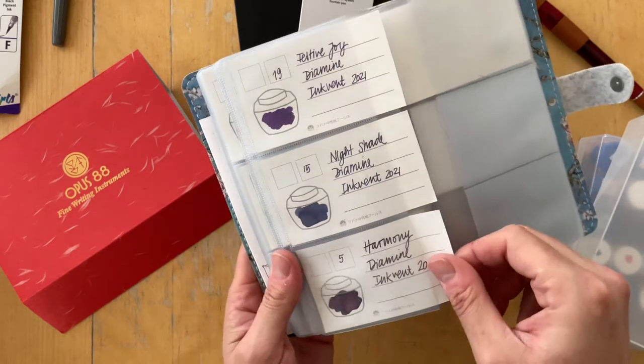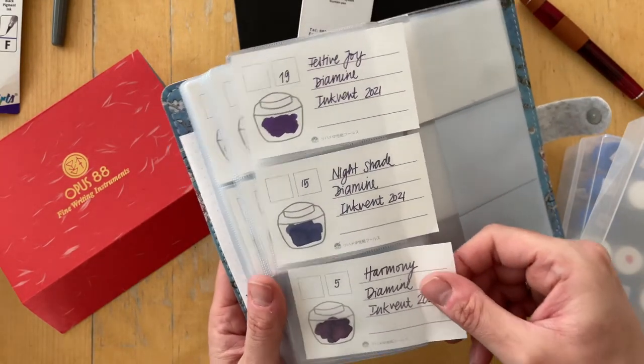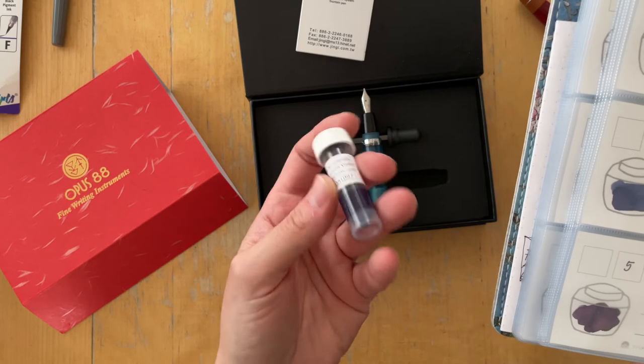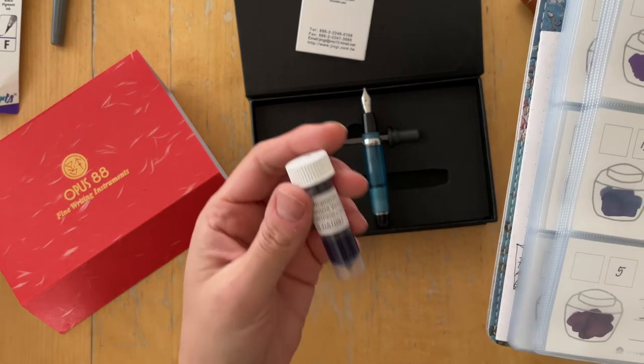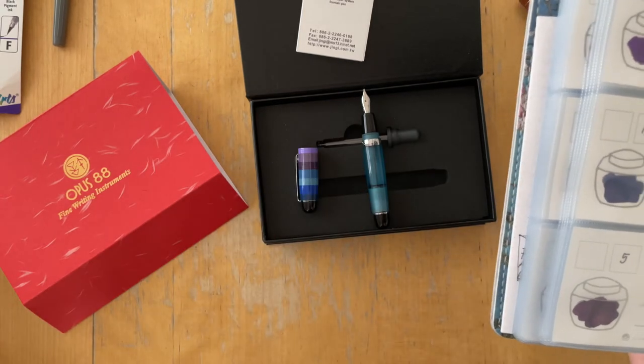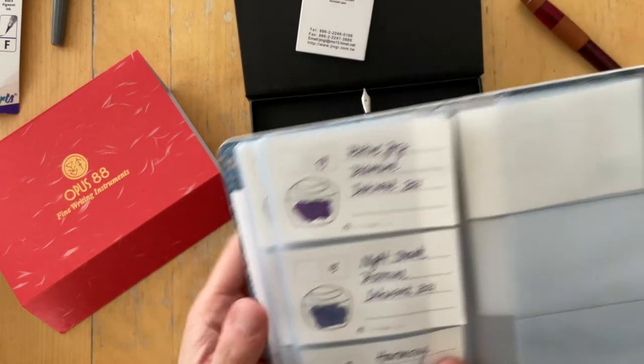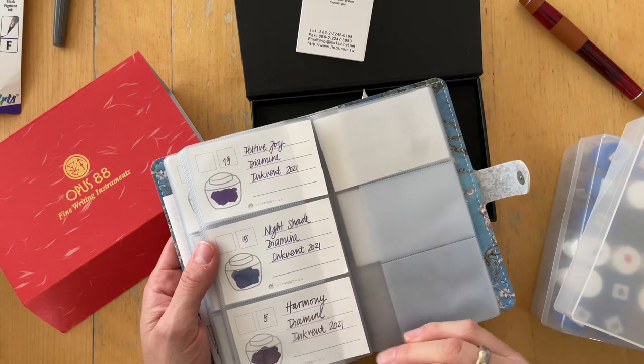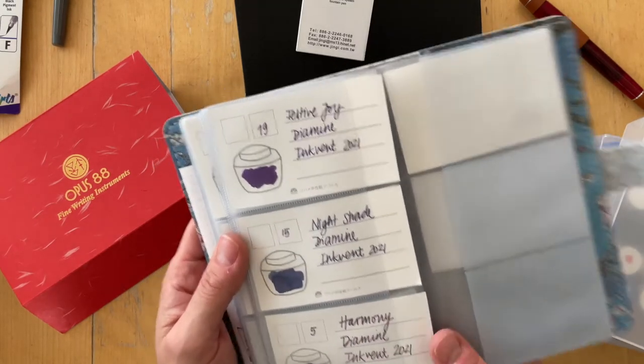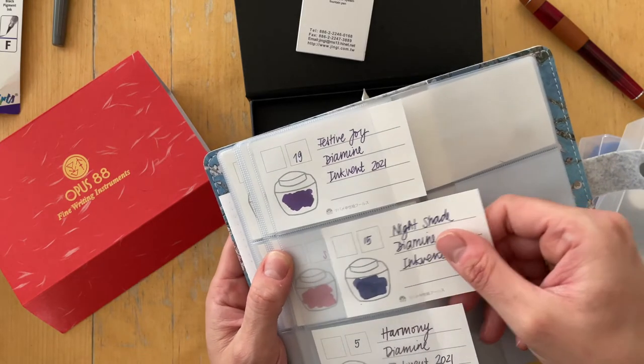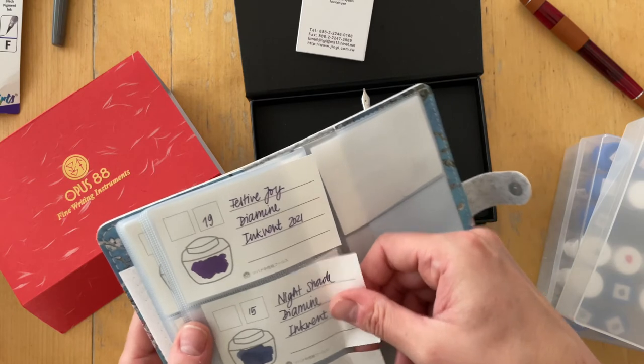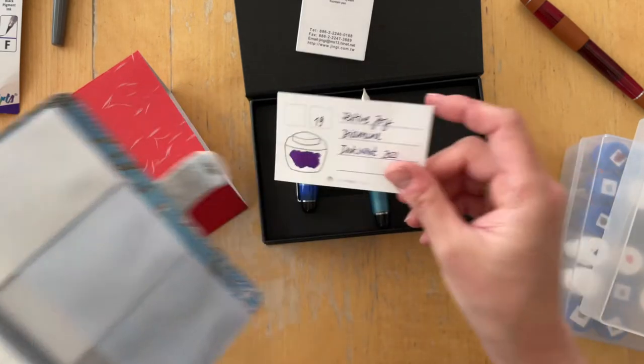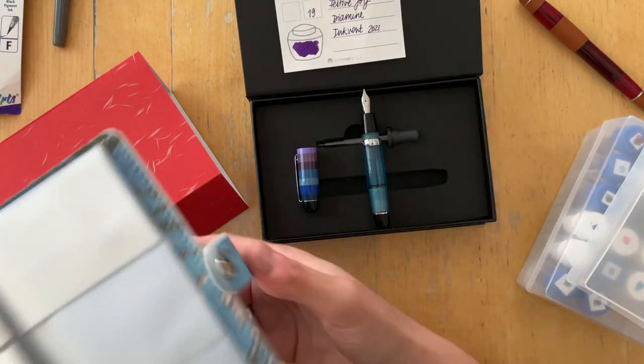I don't know. I don't want to use a shimmer ink at all. And I'm not so sure. I don't know how this is supposed to perform regarding dryness and how wet it is. So I think I'm going to leave this here and I'm going to go with a purple ink from the Diamine ink vent. And these are three that I filed under purple. Nightshade is really, I think I'm going to go with the brightest purple here, which is the festive joy. And I really like how, yeah, I think that's what I'm going to do.